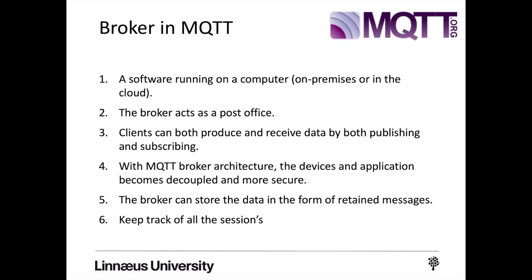MQTT does not use the address of the intended recipient, but instead uses the subject line called a topic. Anyone who wants a copy of that message subscribes to that topic. Multiple clients can receive the message from a single broker — that is a one-to-many capability. Similarly, multiple publishers can publish topics to a single broker, and each client can both produce and receive data by both publishing and subscribing, making it essentially a many-to-many communication.